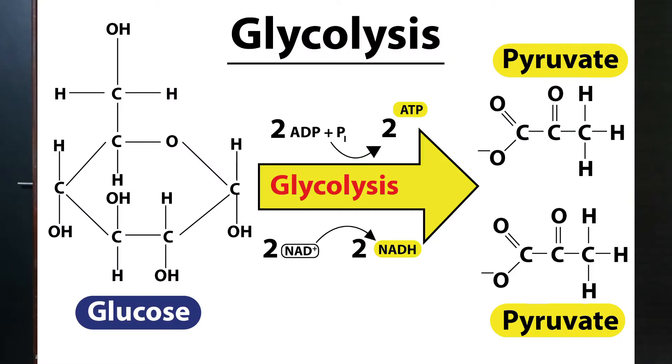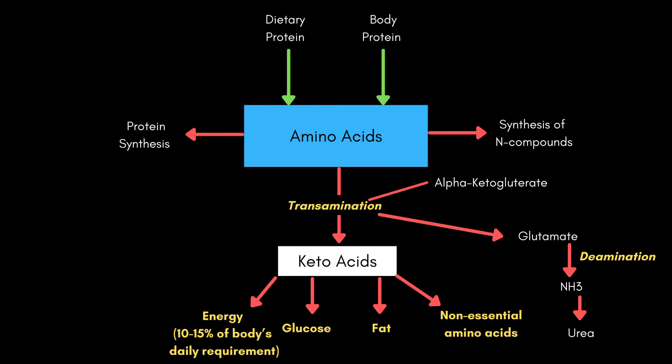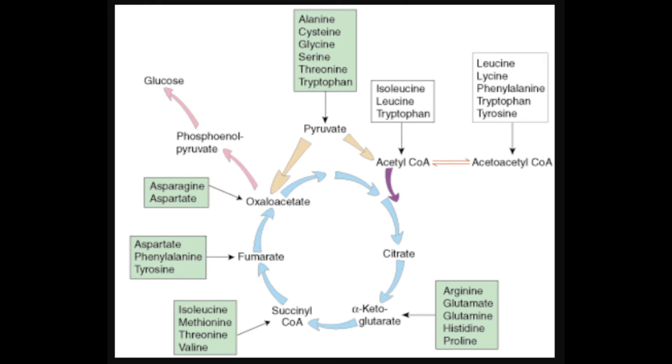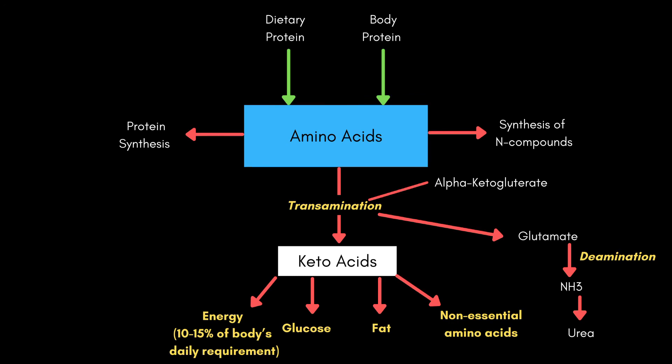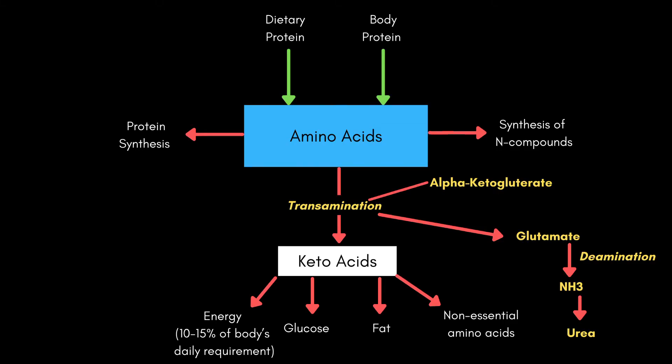When amino acids are used for energy production, carbohydrate synthesis, fat synthesis, or non-essential amino acid production, an important process occurs: transamination and deamination. Since these pathways don't require nitrogen — they only need carbon, hydrogen, and oxygen — the nitrogen present in amino acids is removed, converting them into keto acids. These keto acids then enter different stages of the glycolysis pathway. The removed nitrogen becomes ammonia, which is toxic, so the body converts it into urea, which is excreted through urine.